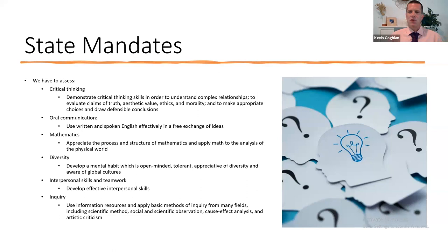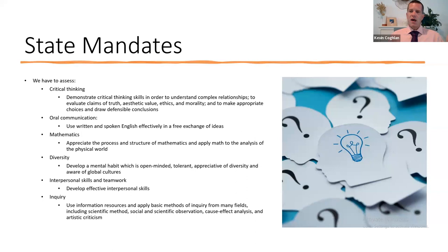We also measure interpersonal skills and teamwork, which involves developing effective interpersonal skills such as working in groups as a team. We also measure inquiry: using information resources and applying basic methods of inquiry from many fields, including scientific method, social and scientific observation, cause-effect analysis, and artistic criticism. These are the core components of what we are measuring in assessment for general education outcomes. Not every class is capable of having an assignment that can be measured to evaluate student learning in these areas, but for those courses where it does work, we can evaluate these.